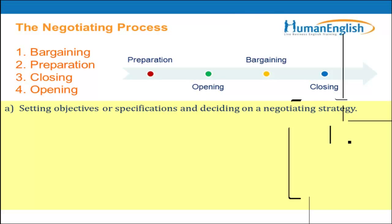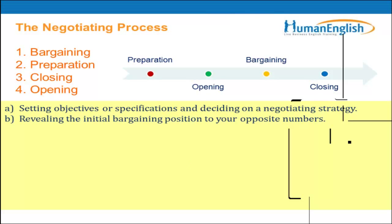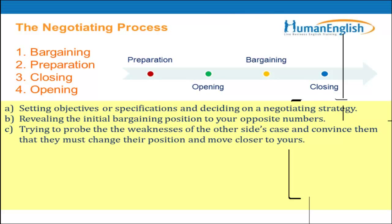Here we have phrases and expressions in a negotiating process to match with the stage of negotiation. First: 'Setting objectives or specifications and deciding on a negotiating strategy' — that is preparation. B: 'Revealing the initial bargaining position to your opposite numbers' — Coletta got it: this would be bargaining, at the end of the opening and the beginning of the bargaining. It's a fine line between the two.